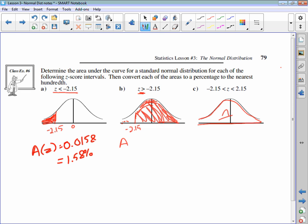So the area of z in this case, z is greater than negative 2.15, it's going to be 1 minus 0.0158, or 0.9842, which is 98.42%. That means, for any z-score greater than, 98.42% of the data values are going to be more than negative 2.15 z-score.